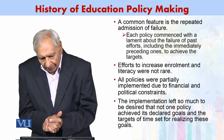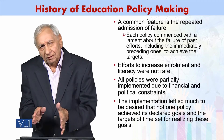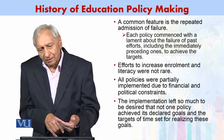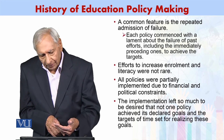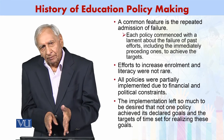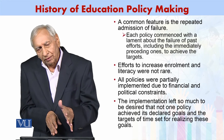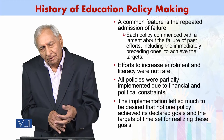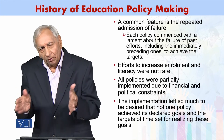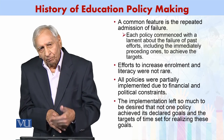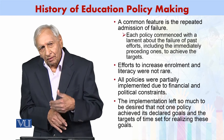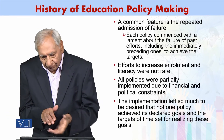Efforts to increase enrollment and literacy were not rare — every policy claimed and planned to move toward universal literacy and increased enrollment, but that achievement has not been realized yet. All policies were only partially implemented. There are two main reasons for partial implementation: financial constraints and lack of political will. Population increase has also been a contributing factor.